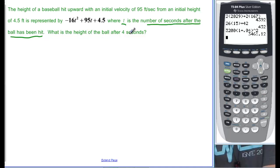So, what is the height of the ball after four seconds? Well, look at our variable. It's T. And we want to know after four seconds, so we're going to let that be four. So, negative 16 times 4, and then that squared, plus 95, again times 4, and then plus 4.5.